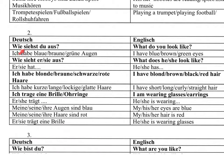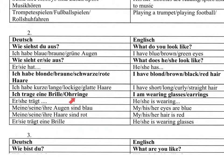Back to this question: Wie siehst du aus? Ich habe blonde, braune, schwarze, rote Haare. Ich habe kurze, lange, lockige, glatte Haare. Ich trage eine Brille. Ich trage Ohrringe. Meine Augen sind blau. Meine Haare sind rot.